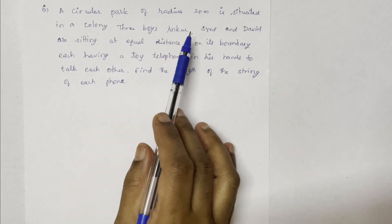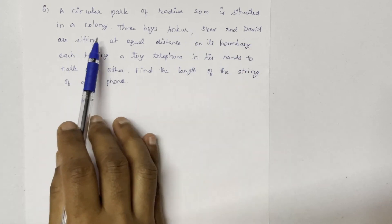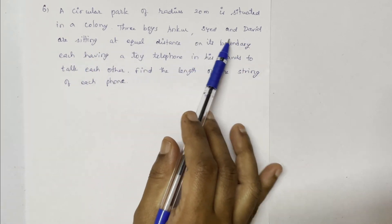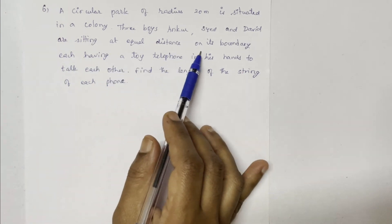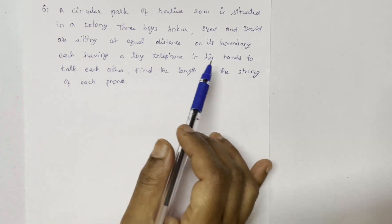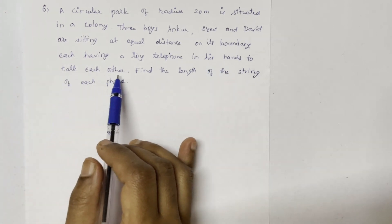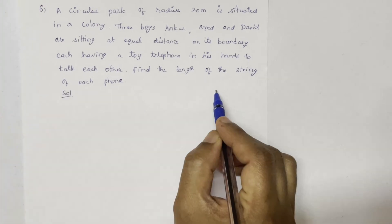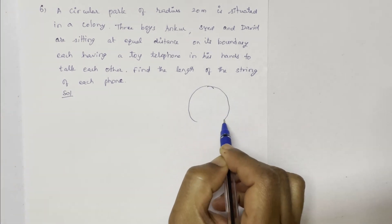A circular park of radius 20 meters is situated in a colony. Three boys, Coorsayad and David, are sitting at equal distances on its boundary, each having a toy telephone in his hands to talk to each other. Find the length of the string of each phone.